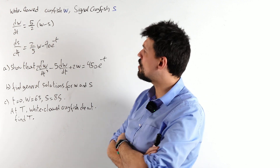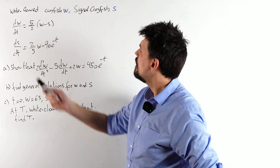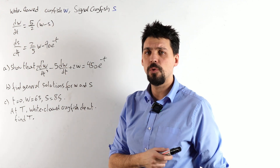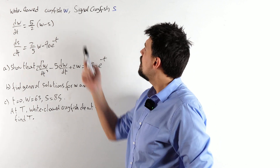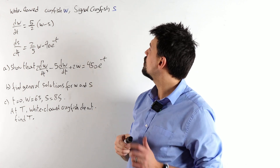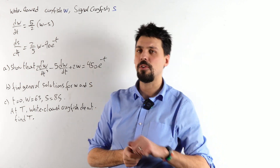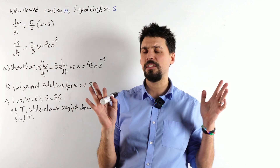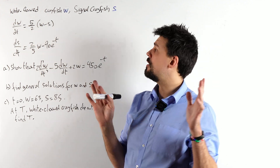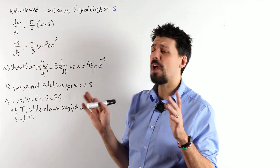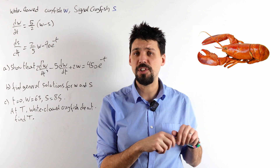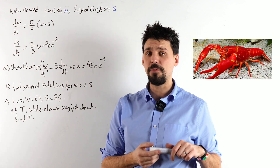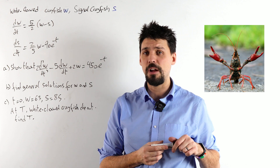So what have we got? Some context. We have a population of white-clawed crayfish which we're going to call W. We've got some signal crayfish which we're going to call S. Probably the last time I'll refer to them as such in terms of crayfish — I don't know what a crayfish is, I've never seen a crayfish.